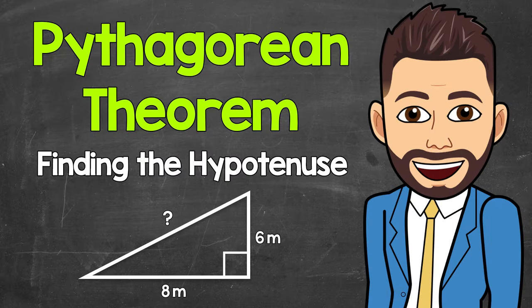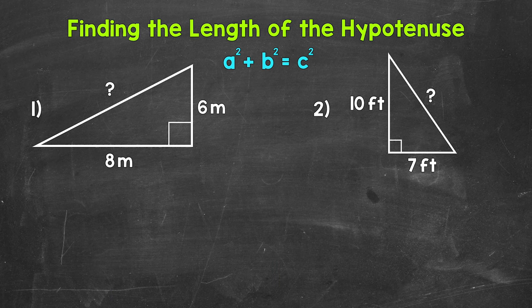Welcome to Math with Mr. J. In this video, I'm going to cover how to find the length of the hypotenuse using the Pythagorean theorem. We use a squared plus b squared equals c squared, with c always being the hypotenuse, and then a and b being the legs.